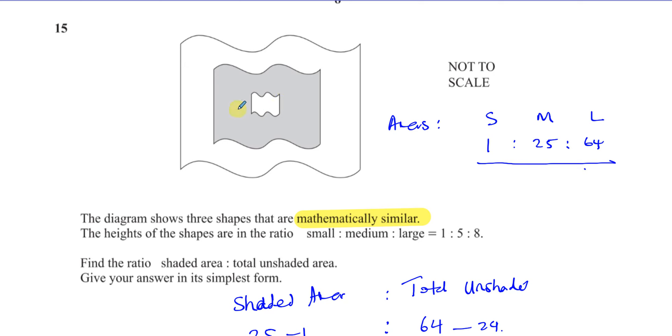But then you have to be a bit tricky with the area. So you say the shaded area is this part, medium one minus the small one. And the unshaded area is the whole thing. But you've got to take away the shaded part, which we just found as 24. So that gives us the answer.